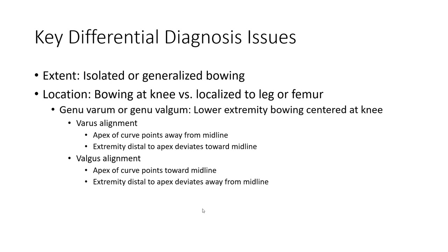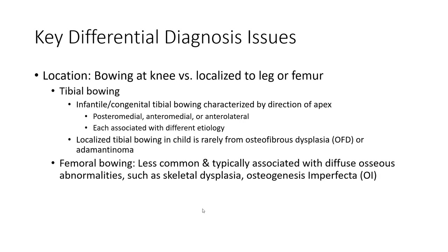Lower extremity bowing centered at the knee: varus alignment — the effect of curve pointing away from midline — versus valgus alignment — the effect of curve pointing toward midline. The extremity in valgus has the effect directed toward midline, including the femur.